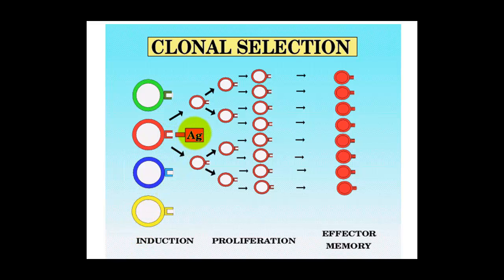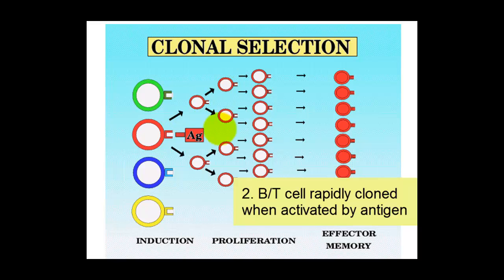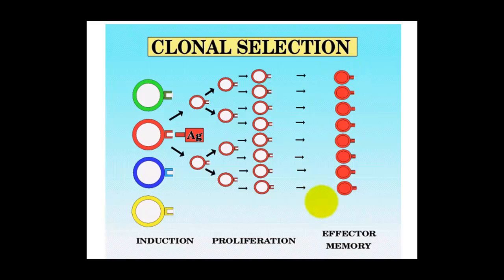And when it's activated by the antigen, it undergoes this rapid reproduction, making lots of what we might call clones. So the antigen selects the B or T cell to make the clones, and we produce a lot of memory cells to stay in the body system to have a fast response in the future.